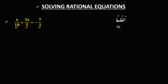To find the LCD, we just need to find the smallest number that is divisible by 10, divisible by 5, and divisible by 2. In this case, we can use 10 because 10 is divisible by 10, 10 is divisible by 5, and 10 is divisible by 2. So we multiply this LCD to every term.